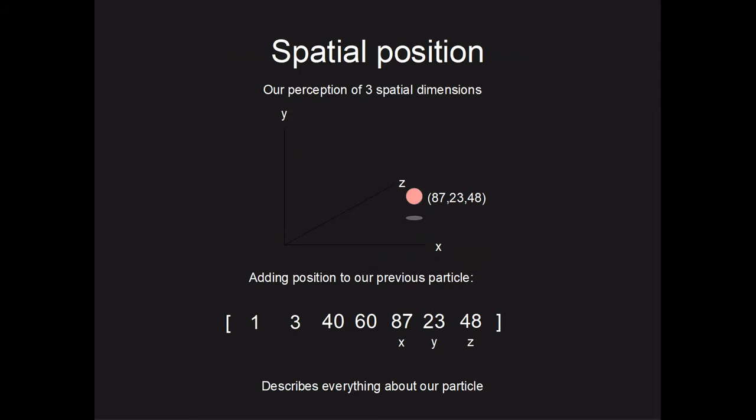In our 3D universe, position could be displayed as three values. So our single electron is now accurately represented using the values 1, 3, 40, 60, 87, 23, 48.